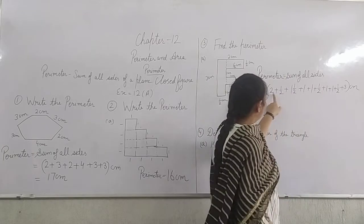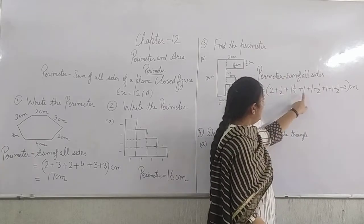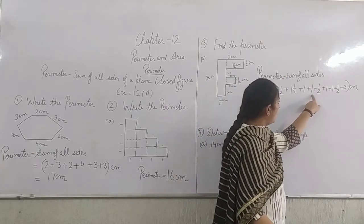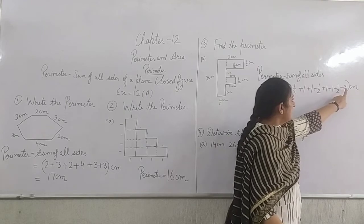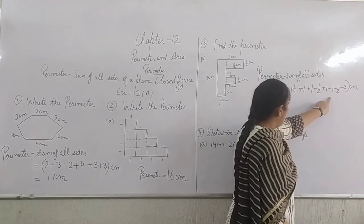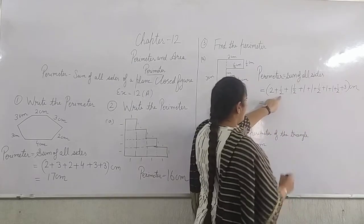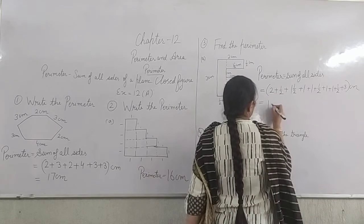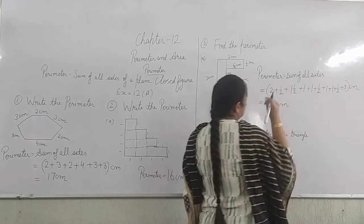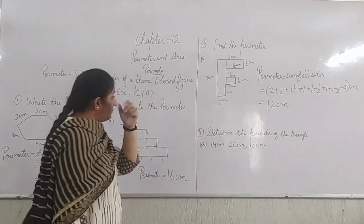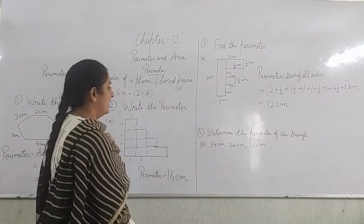Now count these: 2 plus 1 is 3, plus 1 is 4, plus 1 is 5, plus 1 is 6, plus 1 is 7. Then 7 plus 3 is 10, plus 1 is 11, plus 1 is 12. So the answer is 12 centimeters. This is the perimeter of this given figure.